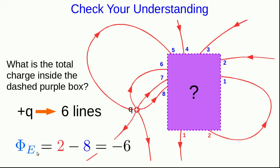And so our total flux is two minus eight, or negative six. And since six lines corresponds to positive q, negative six corresponds to an enclosed charge of negative q inside this surface.